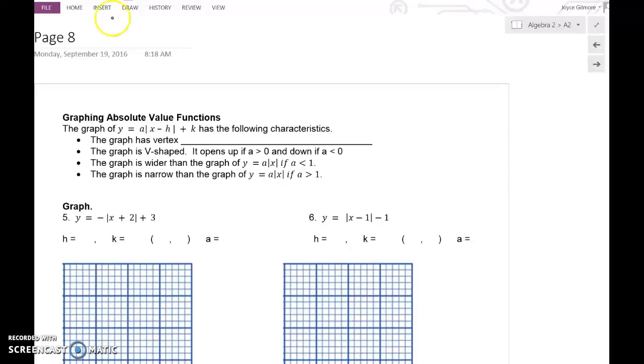When we graph absolute value functions, we are going to refer back to the generic equation for an absolute value function, which is y equals a times the absolute value of x minus h plus k.